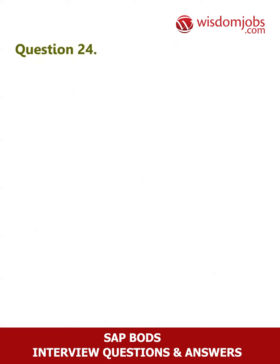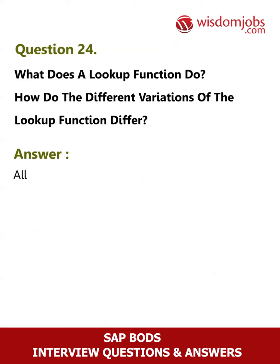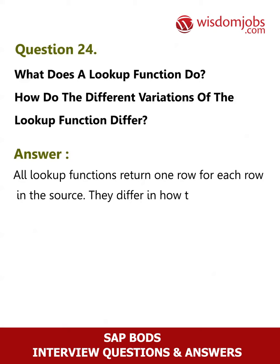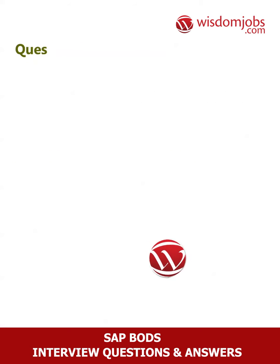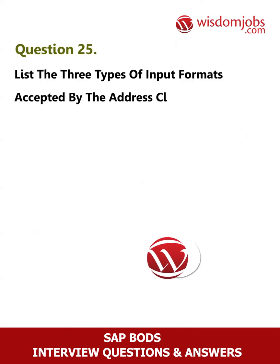Question 24: What does a lookup function do? How do the different variations of the lookup function differ? Answer: All lookup functions return one row for each row in the source. They differ in how they choose which of several matching rows to return.